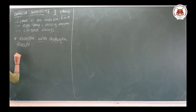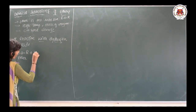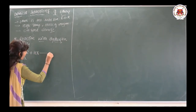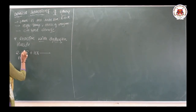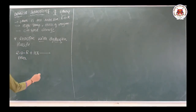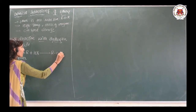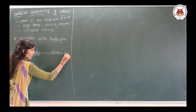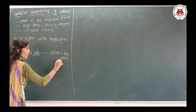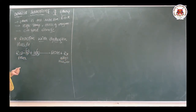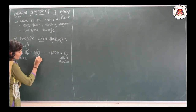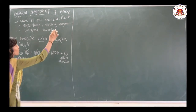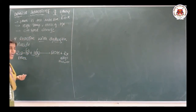When the ether is treated with hydrogen halide (HX), the C-O bond breaks. One product is alcohol (ROH) and the other is alkyl halide (RX). Hydrogen halide must be taken in excess. If excess HX is used, it will further react with the alcohol, eliminating a water molecule (H₂O) to give one more unit of alkyl halide.